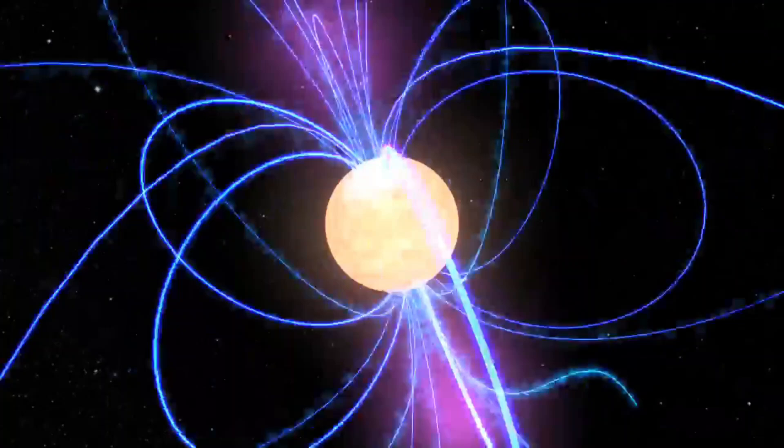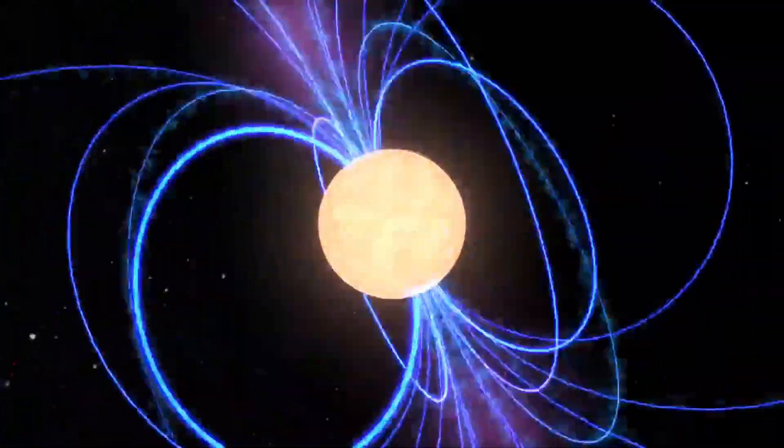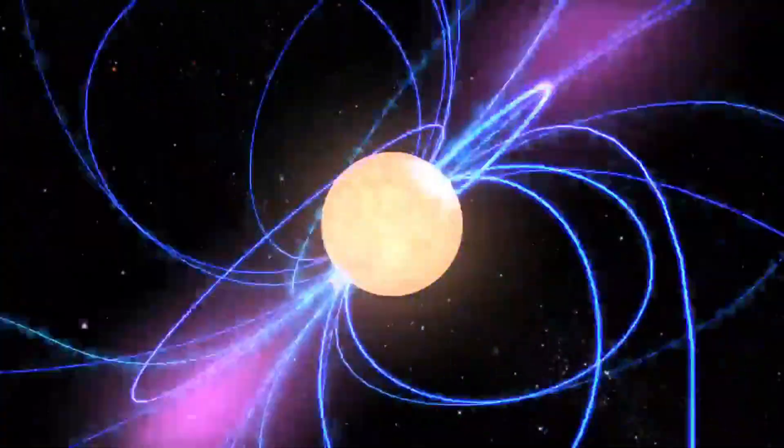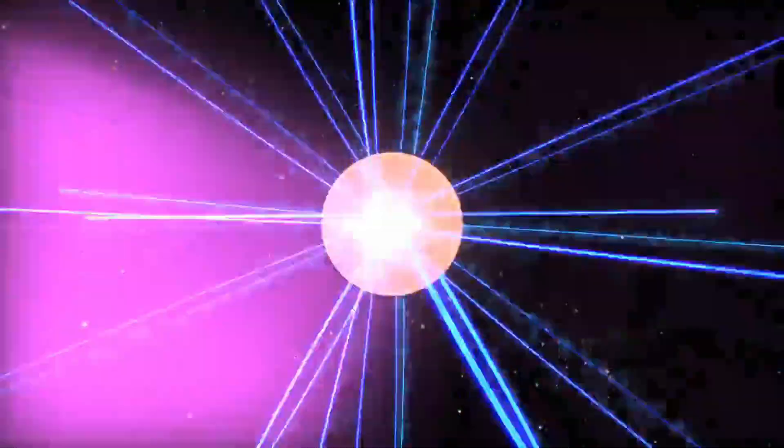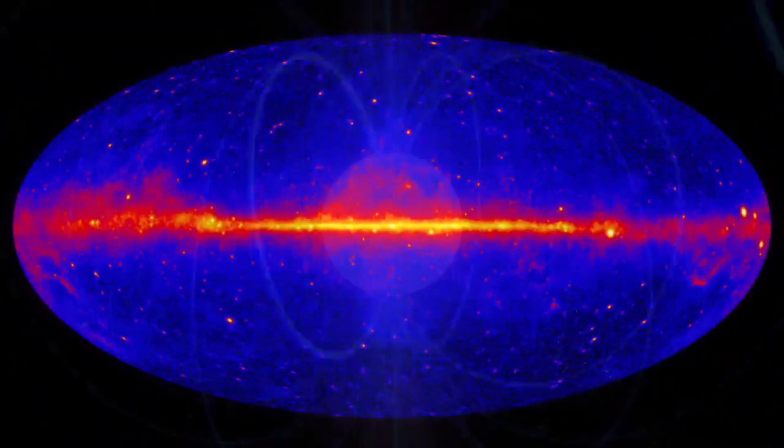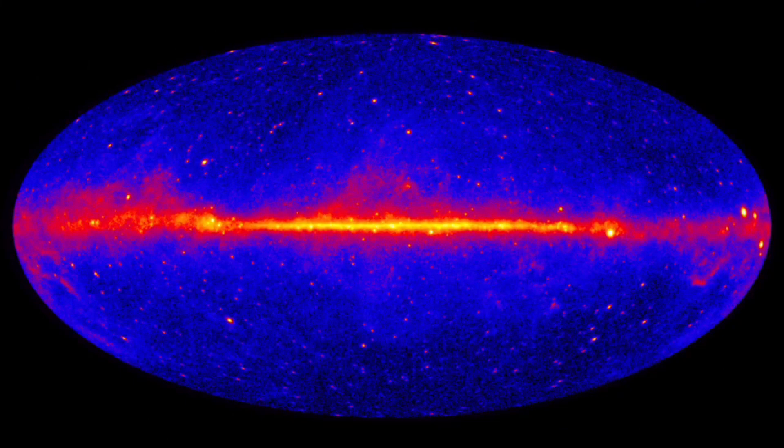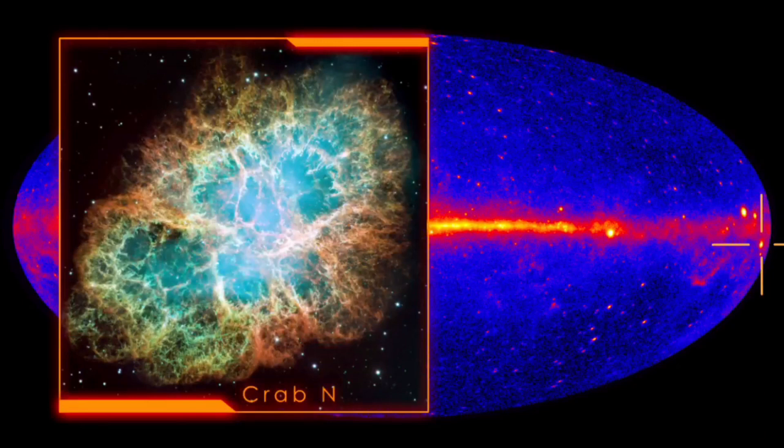As this young pulsar decelerates, it releases vast amounts of energy into its surroundings. A high-speed wind of matter and antimatter particles crashes into the surrounding nebula, creating a shock wave that forms a visible ring. Jets from the pulsar's poles eject X-ray emitting particles perpendicular to this ring.